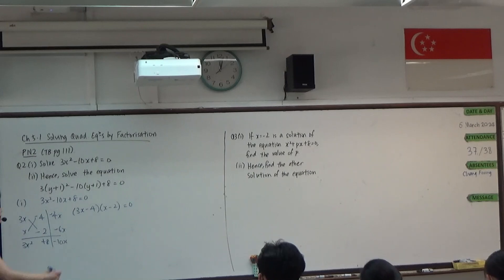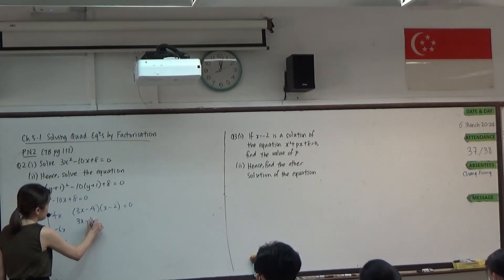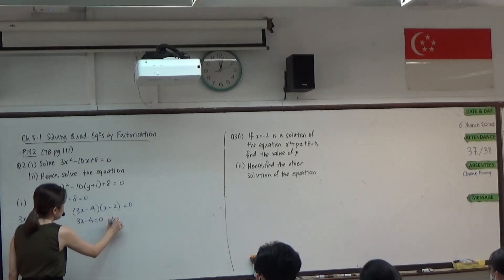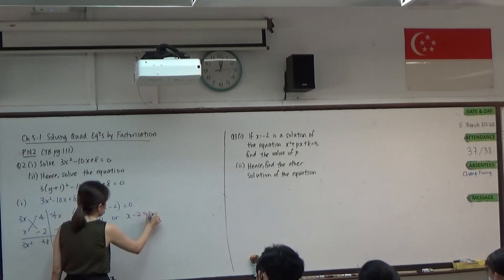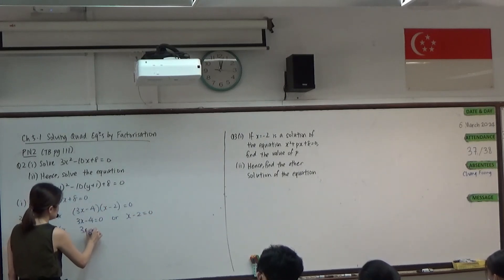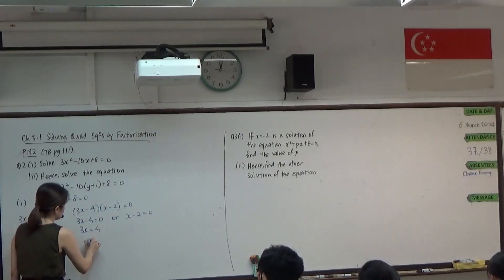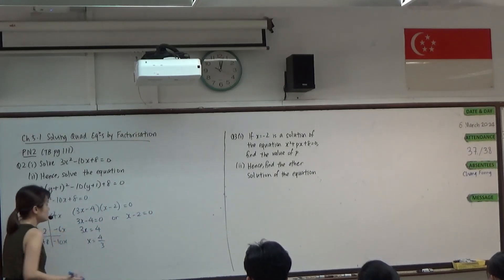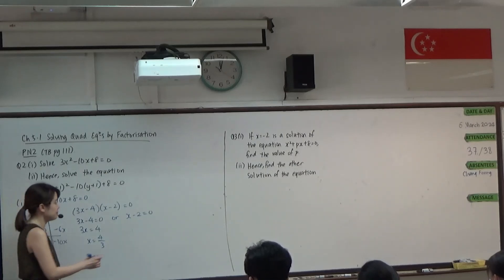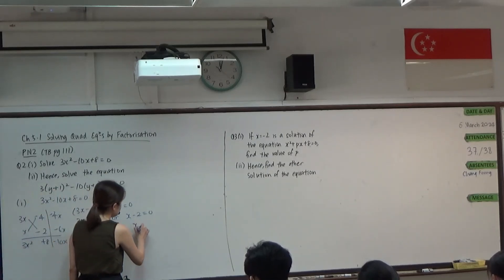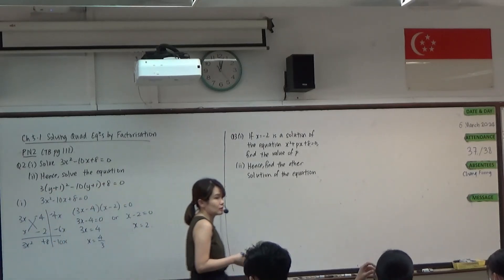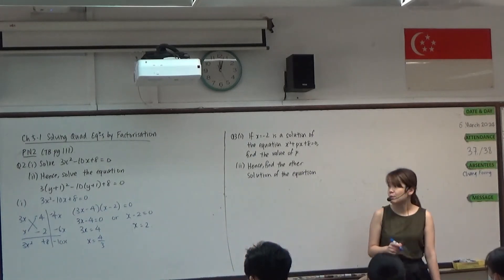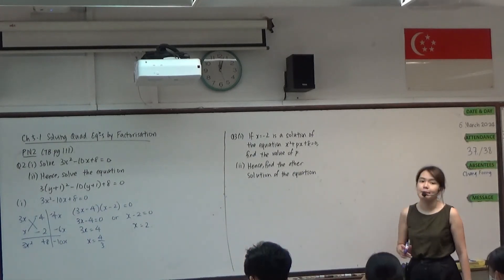Such that we can say 3x minus 4 equals 0, or x minus 2 equals 0. So we get x equals 4 over 3. Otherwise, x equals 2. Okay? So that is the answer that we get from part i.